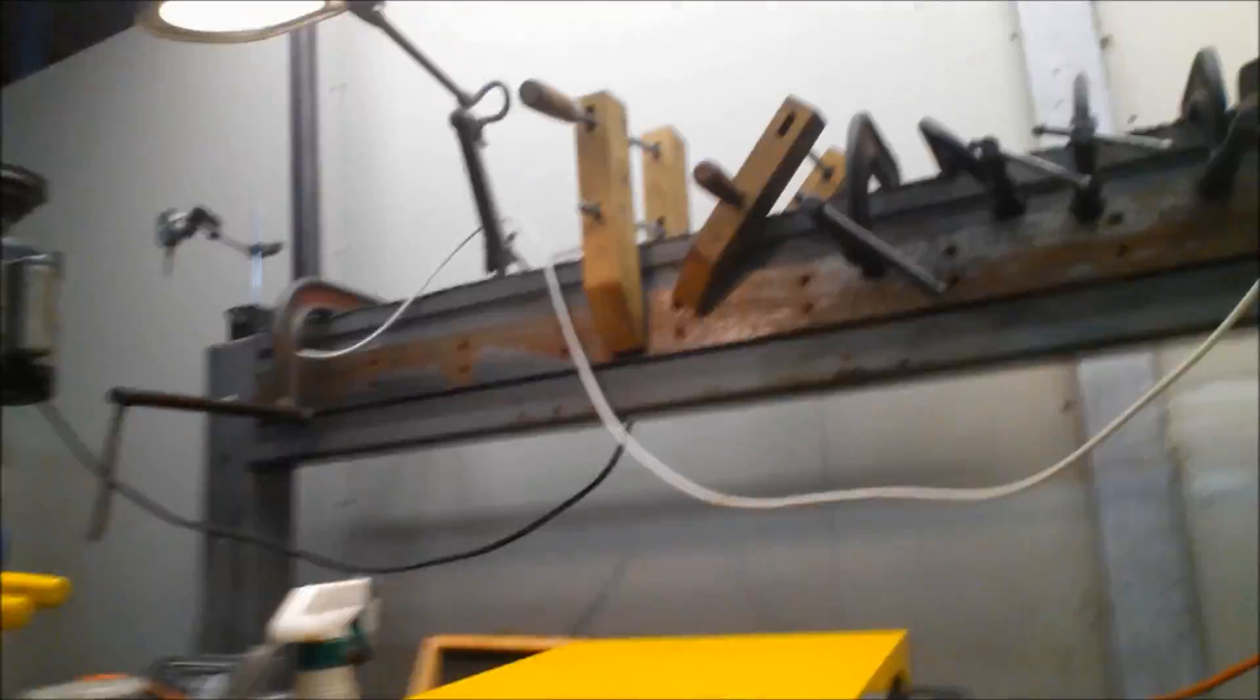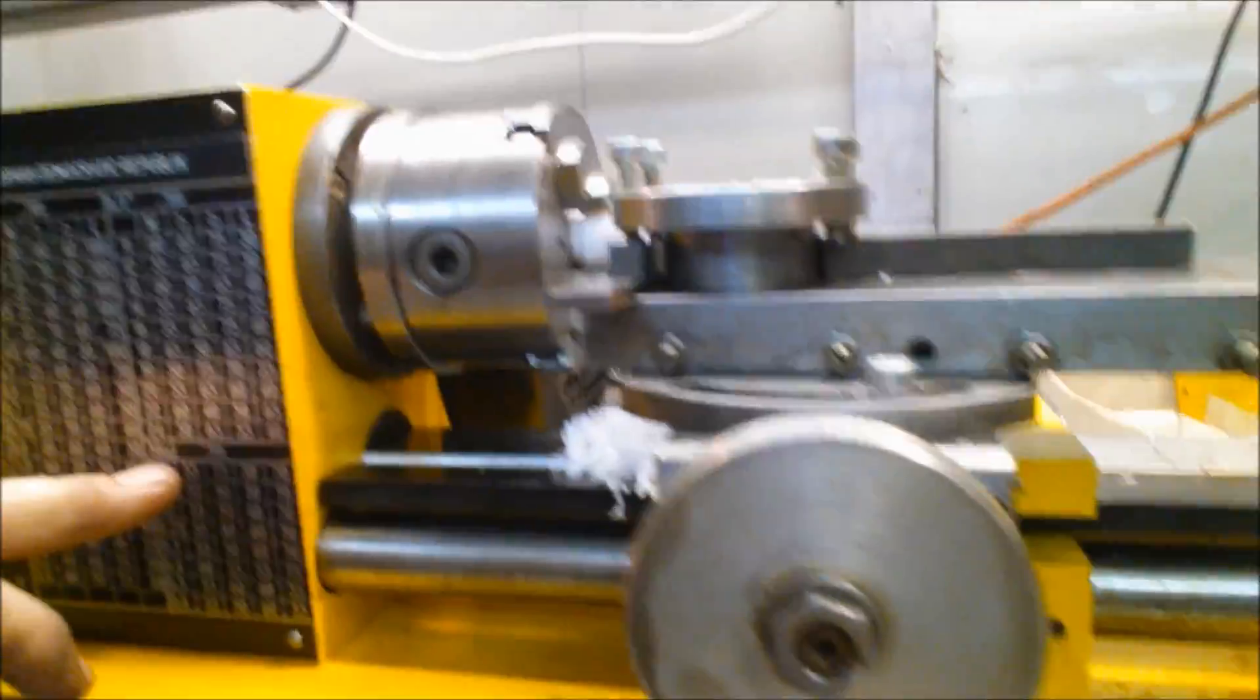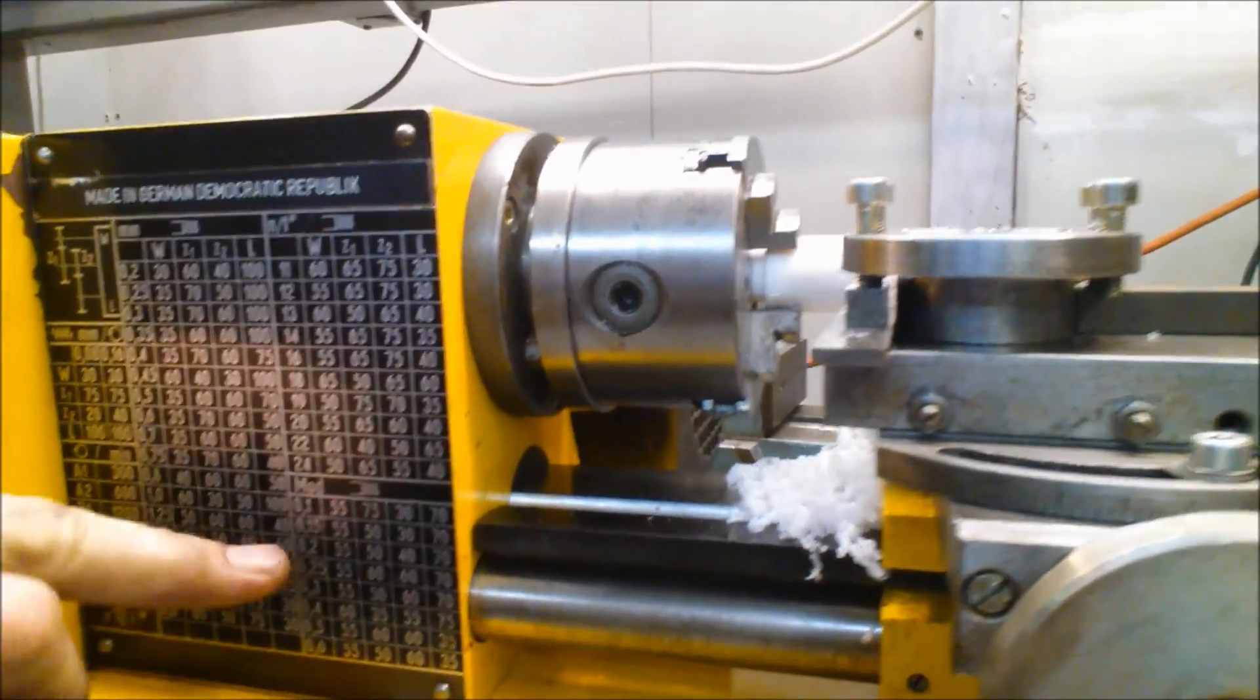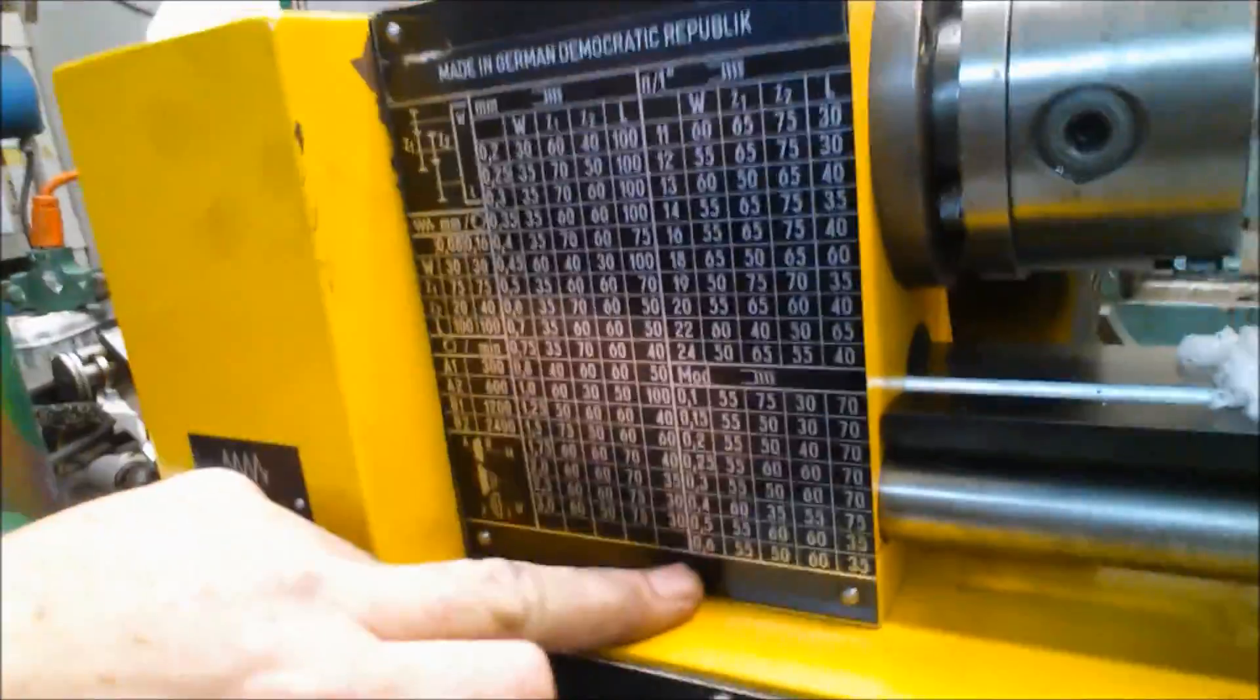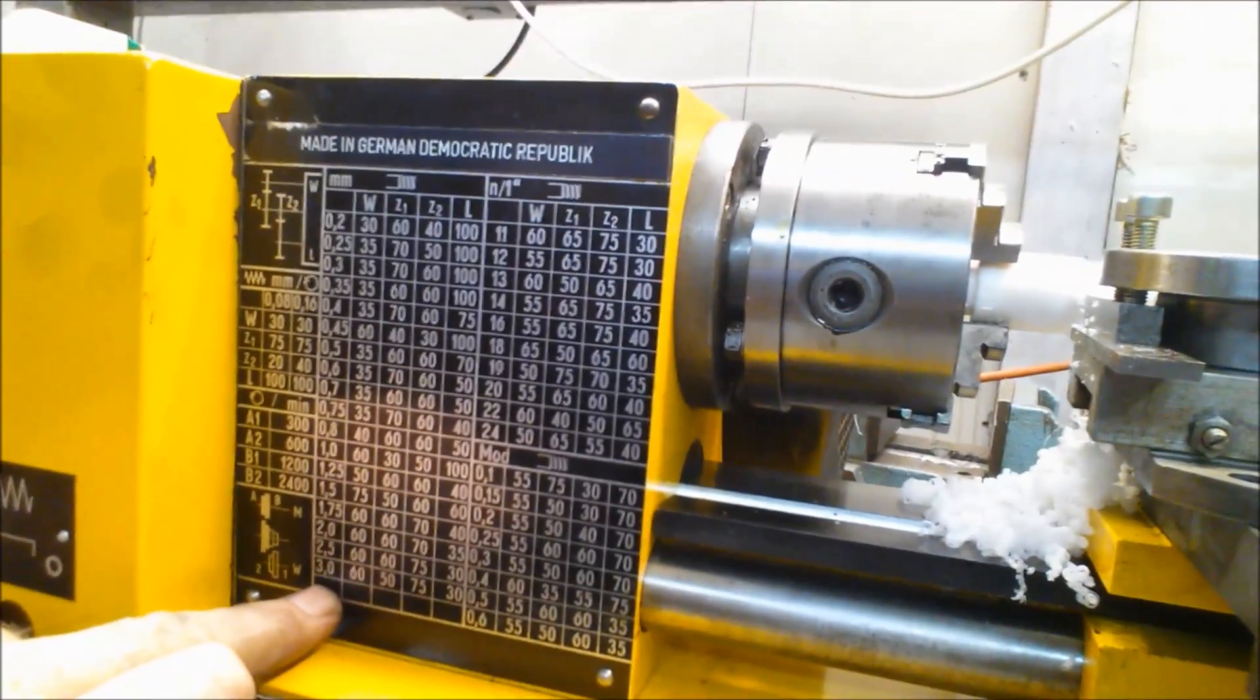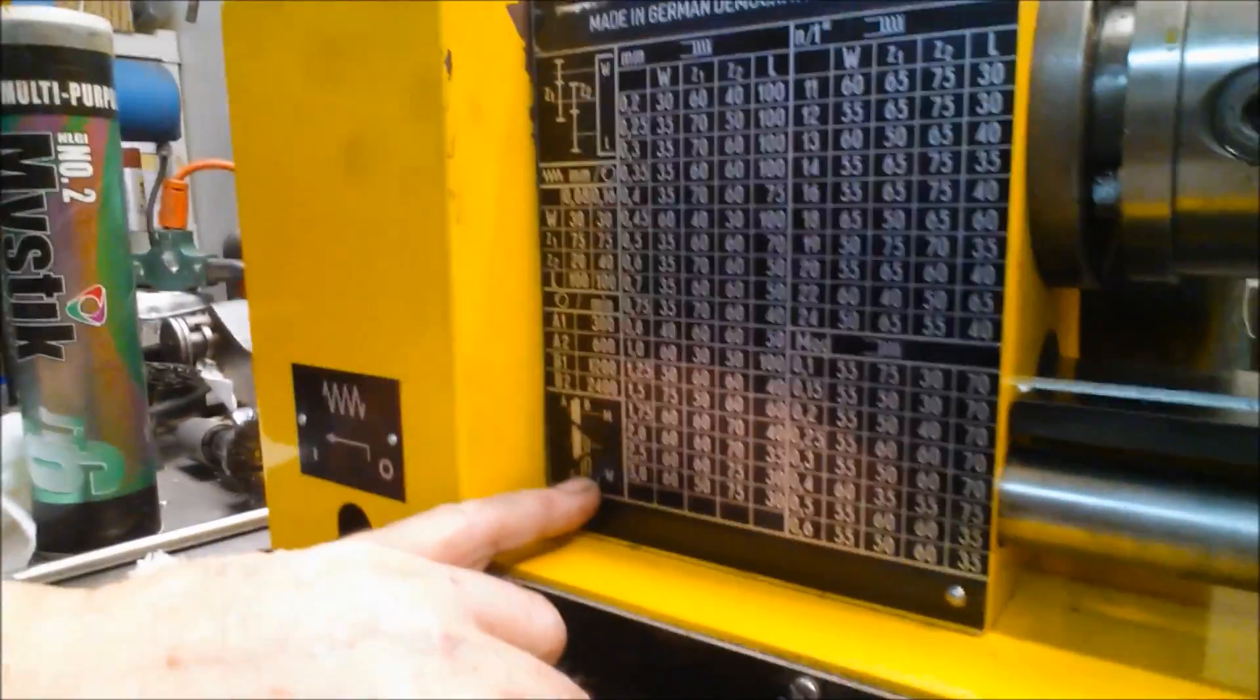The threading is set up so that it'll do threads per inch, and that goes anywhere from 11 to 24. It'll do modular from 0.1 to 0.6, and it'll do the metric from 0.2 to 3. And then in order to use these, you have to actually change out these gears according to the schedule right here.